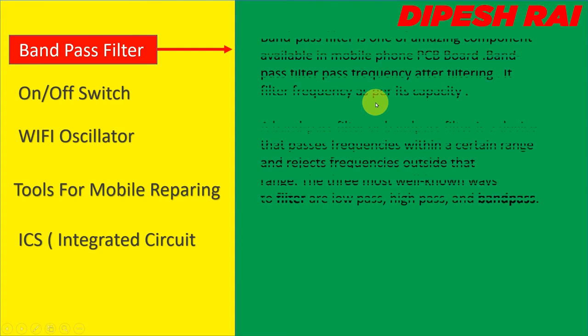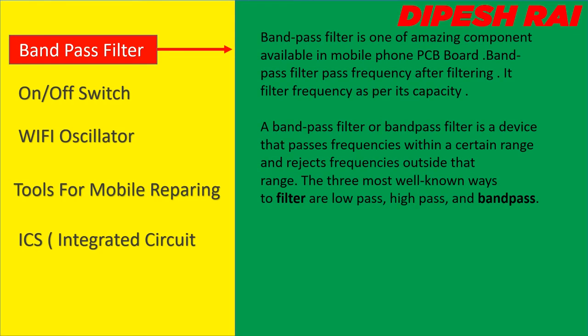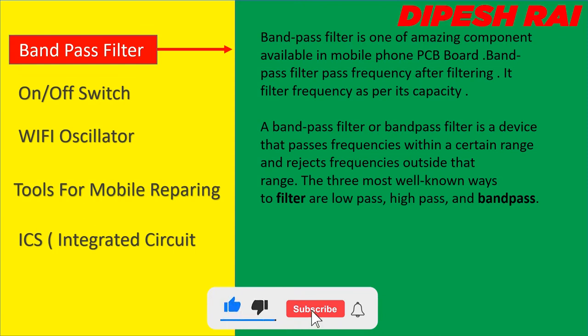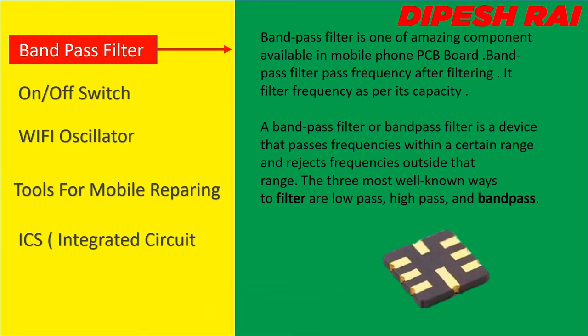Bandpass filter is one of the amazing components available in a mobile phone PCB board. A bandpass filter passes frequency after filtering it — it filters frequency as per its capacity. A bandpass filter is a device that passes frequencies within a certain range and rejects frequencies outside that range. The three most well-known ways to filter are low pass, high pass, and bandpass. Now you can see here the images of the bandpass filter.